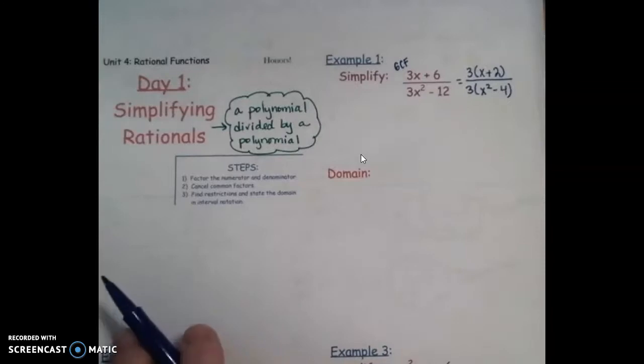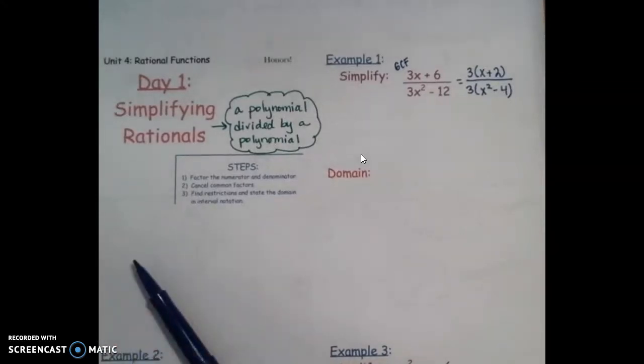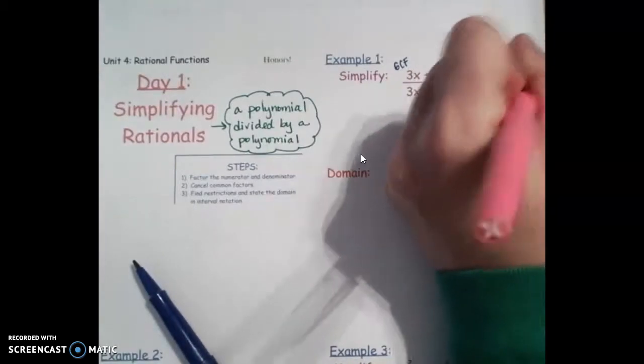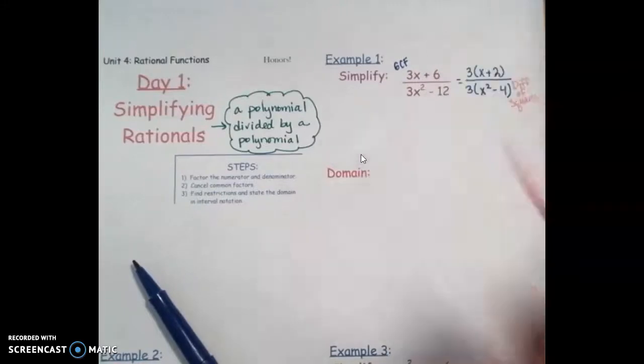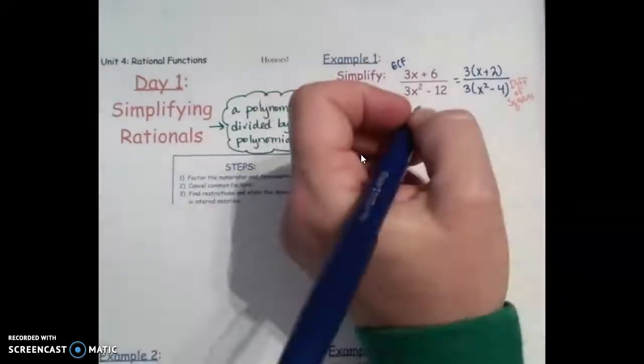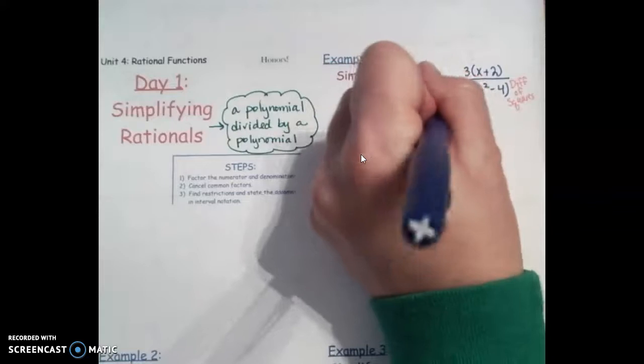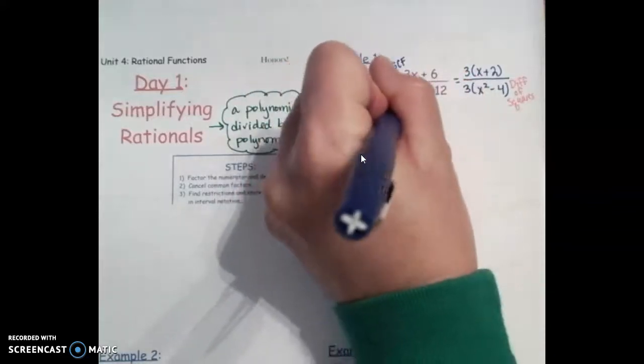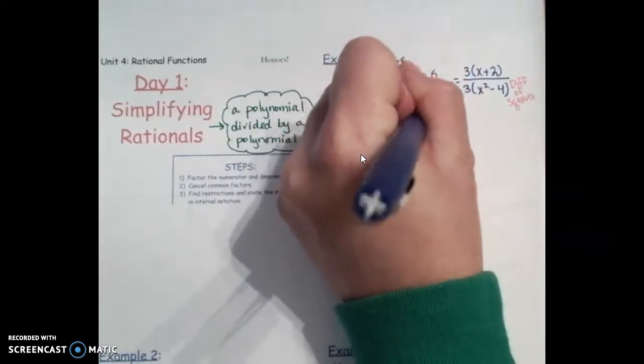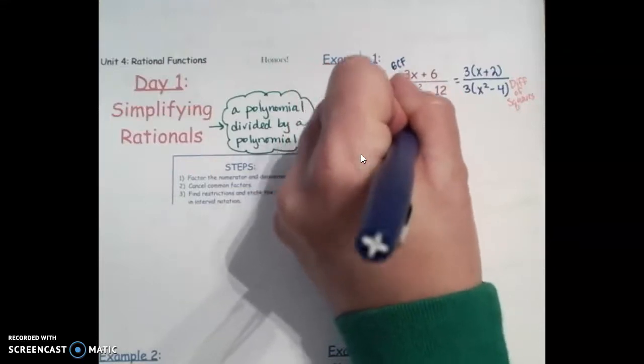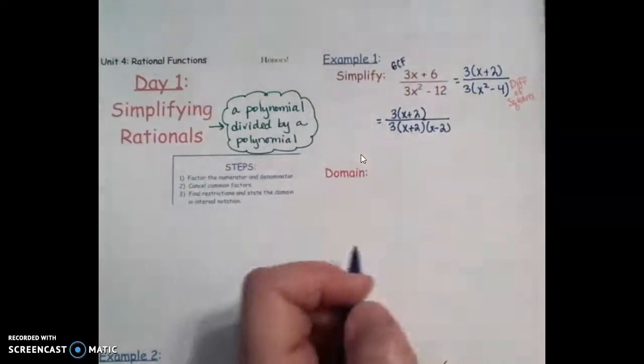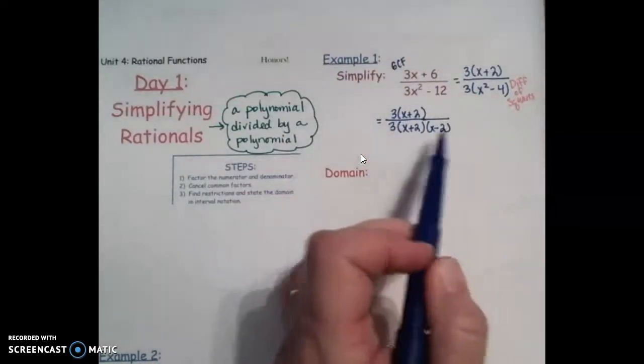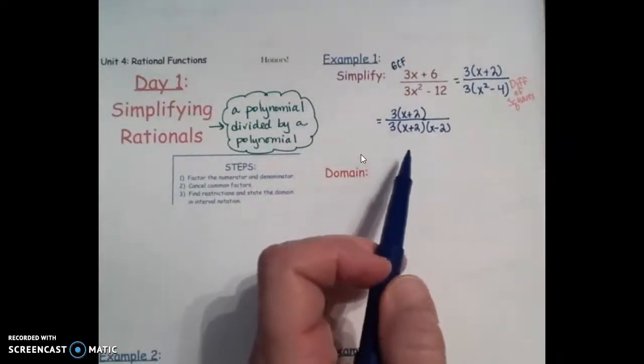Then you need to ask yourself, can I factor anything else? So this is a difference of squares. We need to keep factoring. So we have the 3, and then it's going to be x plus 2, x minus 2 when we factor out that difference of squares. So now everything's factored as far as we can factor.